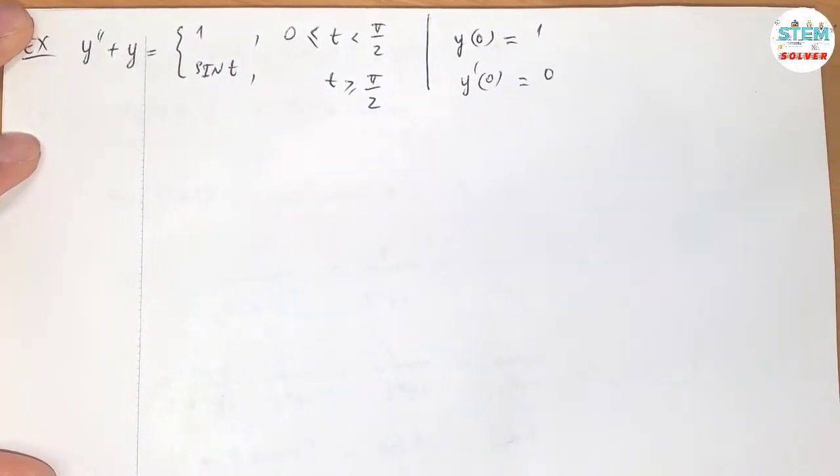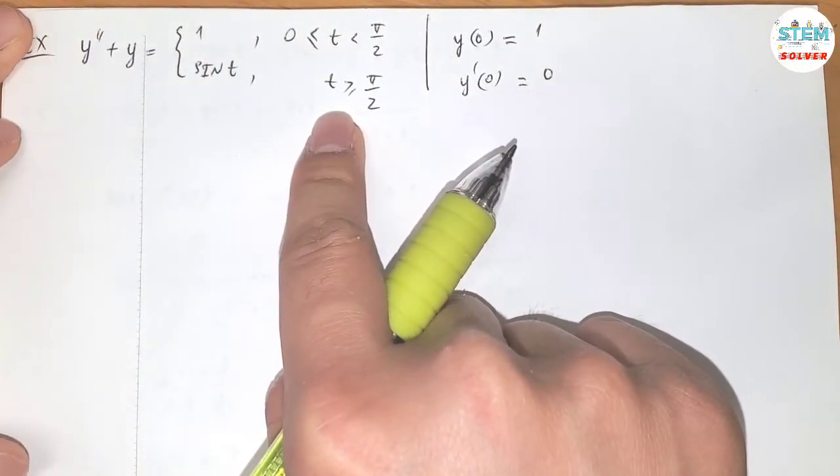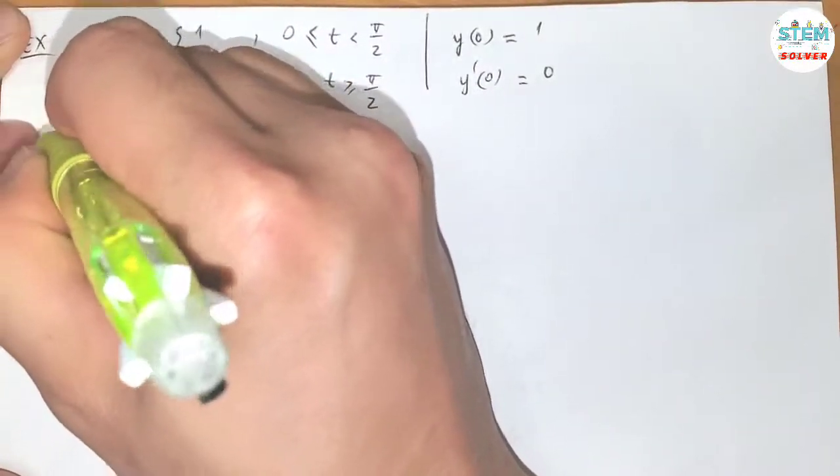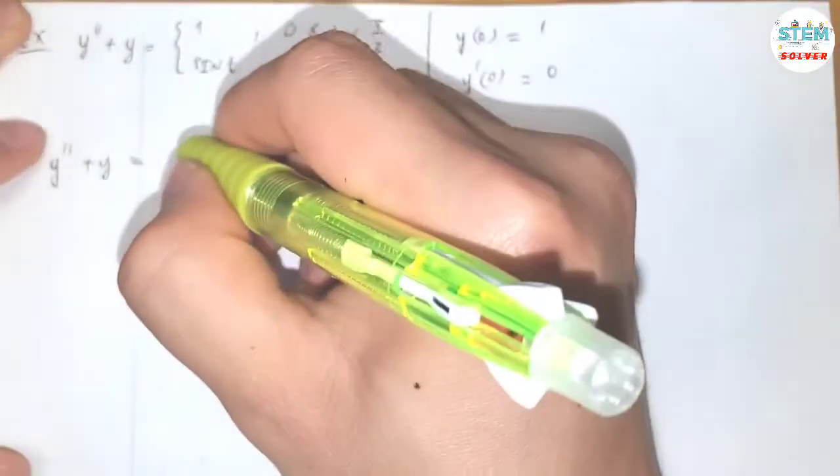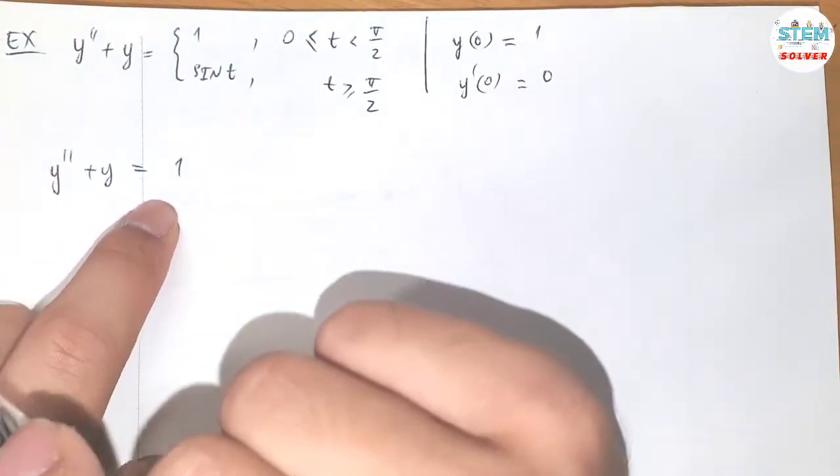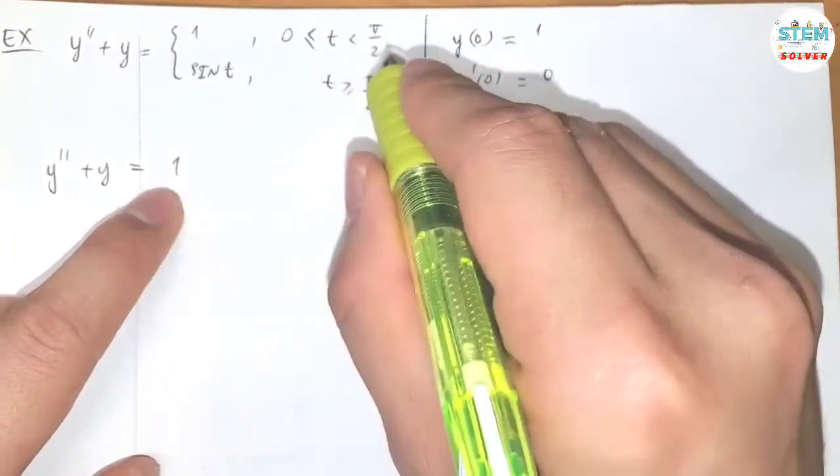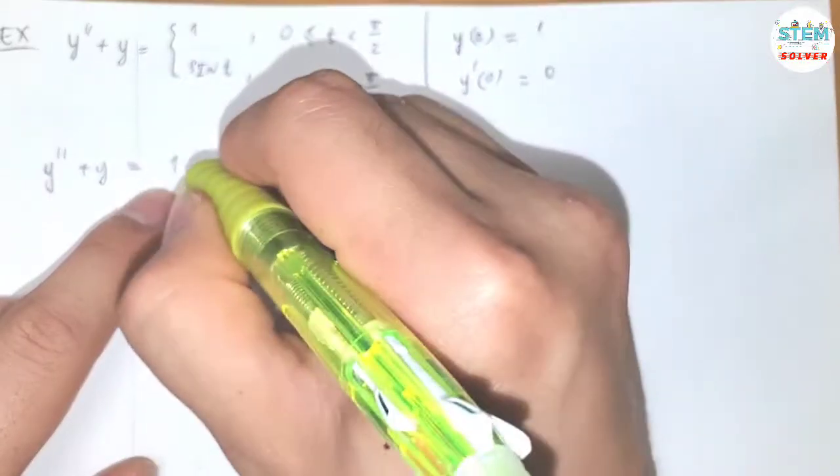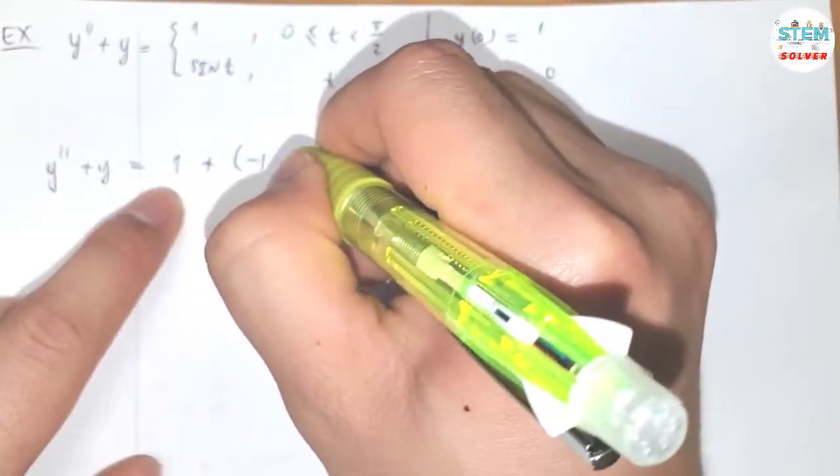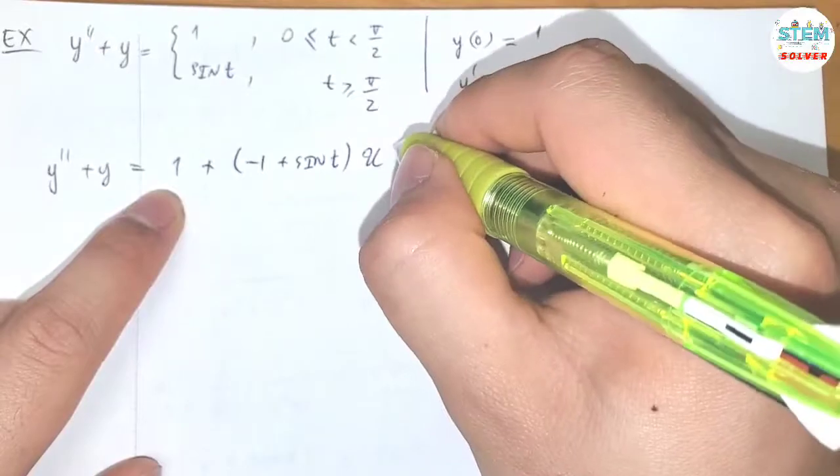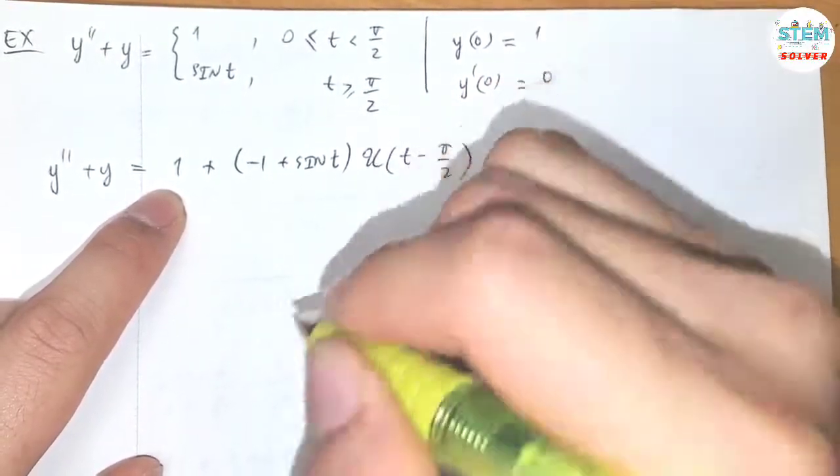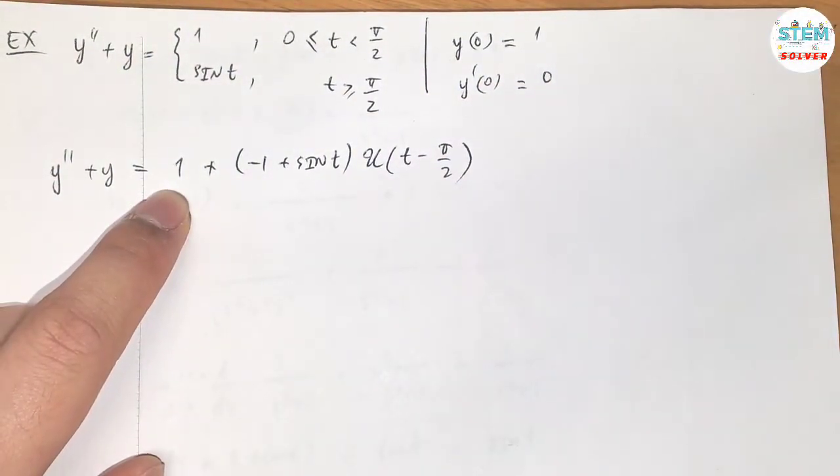First of all, what we are going to do is rewrite this in one line by using the unit step function. Doing that, I will have, so we're going to start off with 1. And then at pi over 2, we need to have sine, that means I'm going to add negative 1 plus sine t, and of course this multiplied by u of t minus pi over 2.